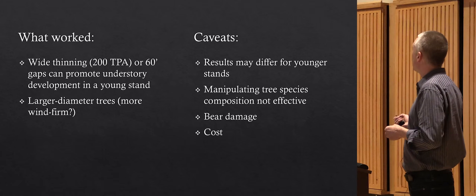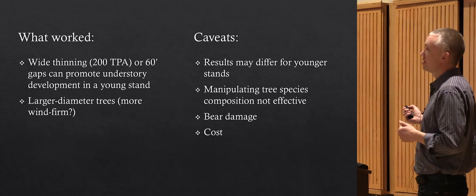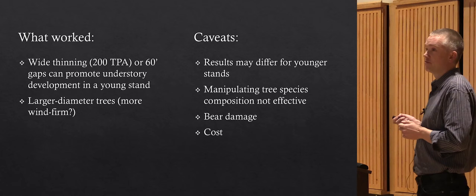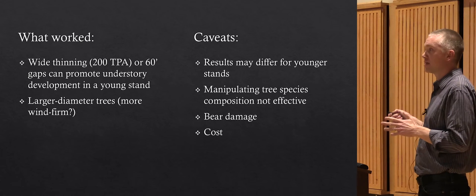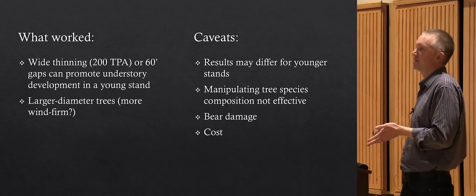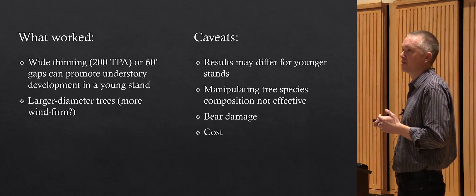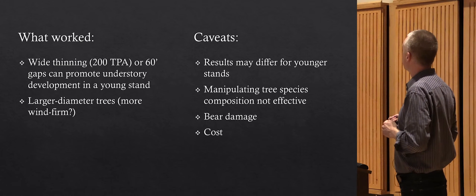We found that trying to manipulate the tree species composition of the overstory was not really effective because Doug fir and hemlock are what's going to grow best there, and they're going to out-compete whatever other trees you tried to put into that overstory during the thinning.